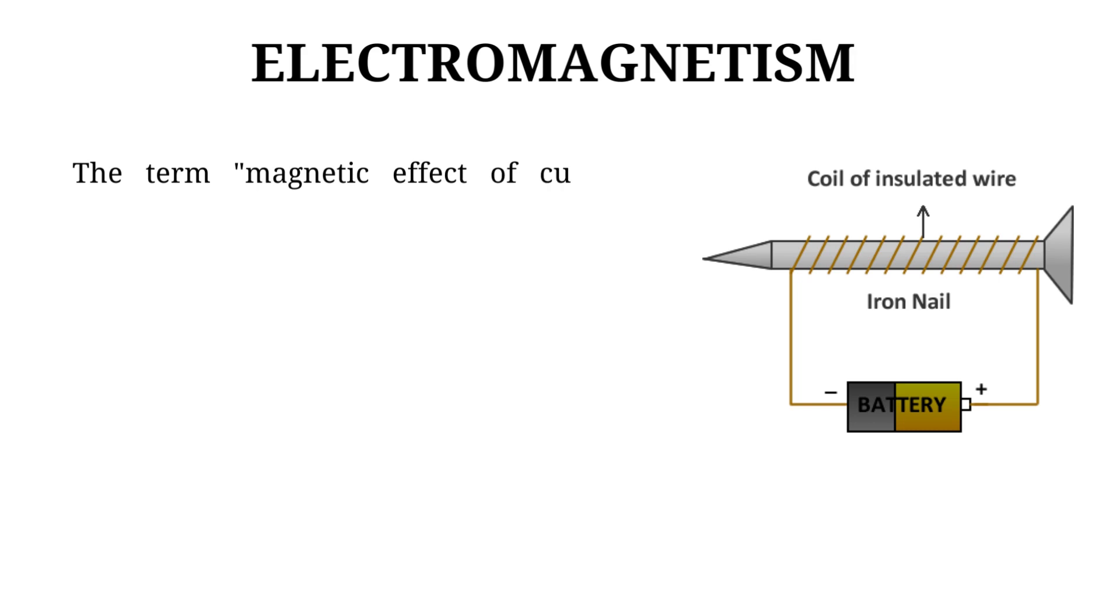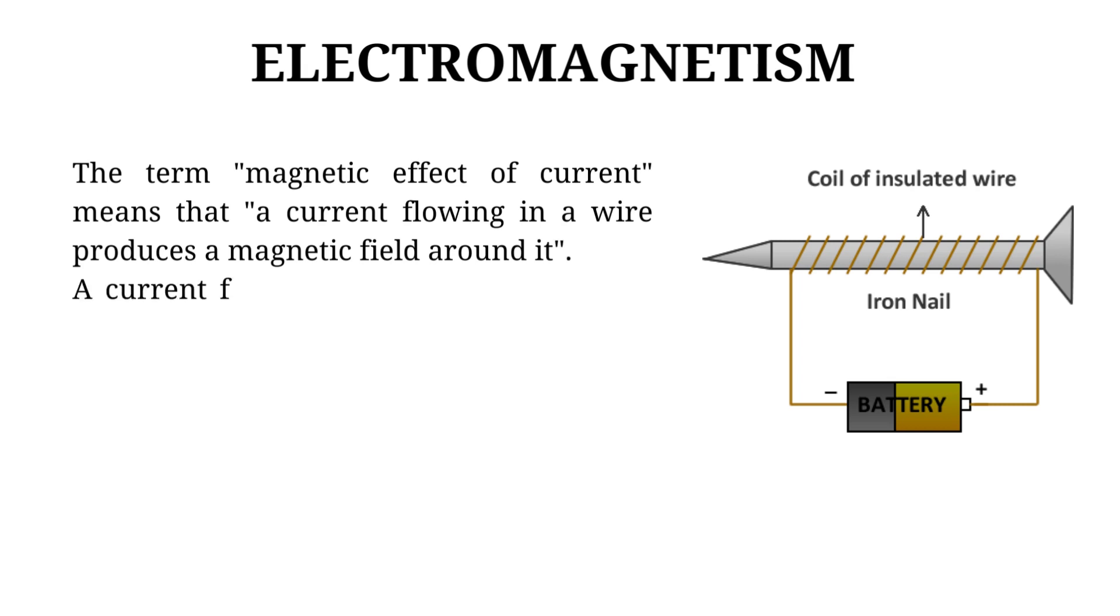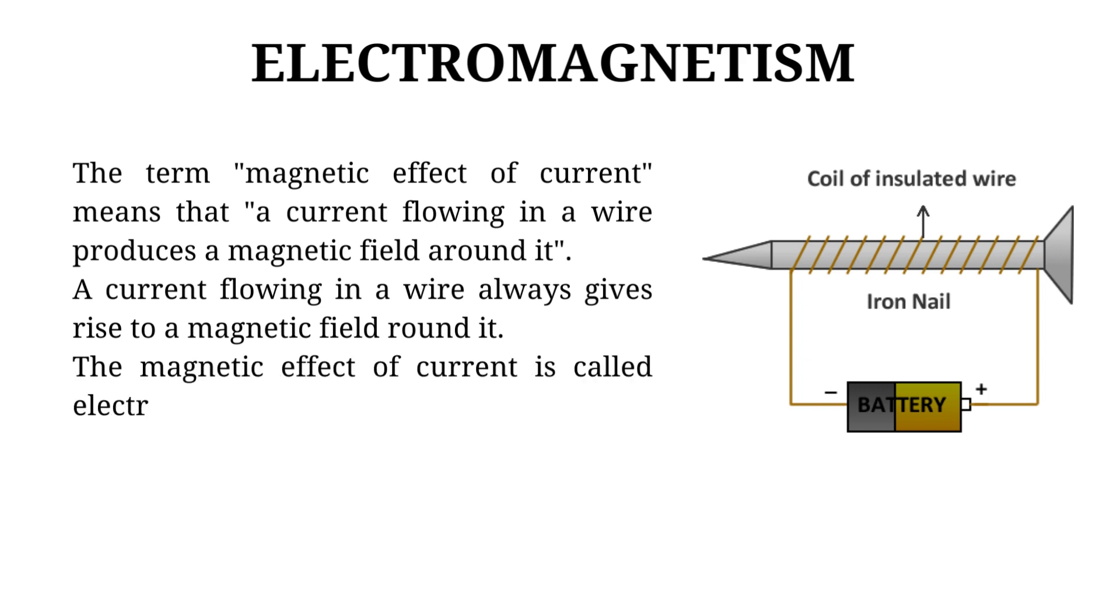Electromagnetism, the term magnetic effect of current means that a current flowing in a wire produces a magnetic field around it. A current flowing in a wire always gives rise to a magnetic field around it. The magnetic effect of current is called electromagnetism which means that electricity produces magnetism.